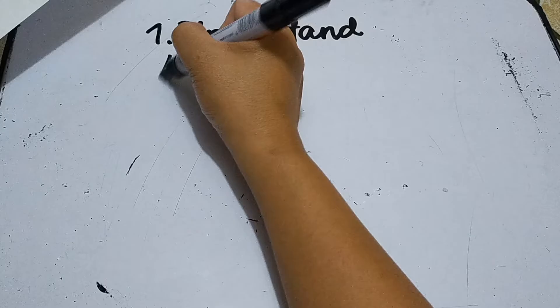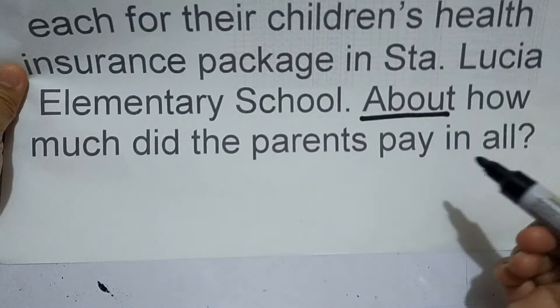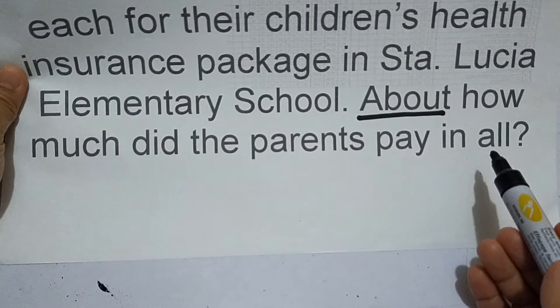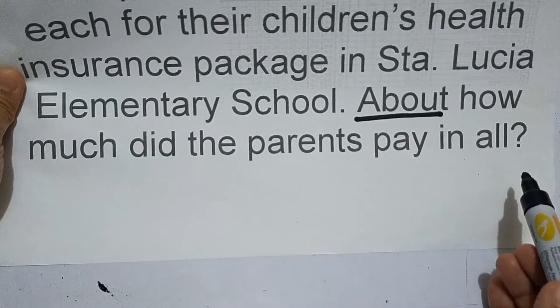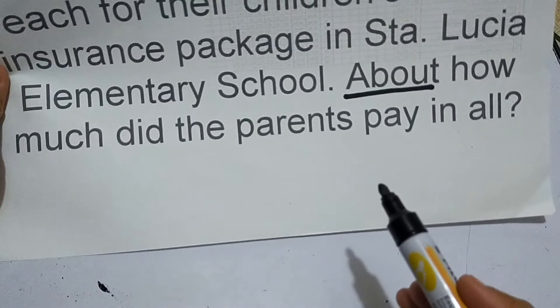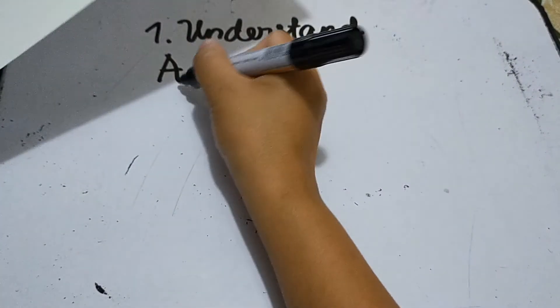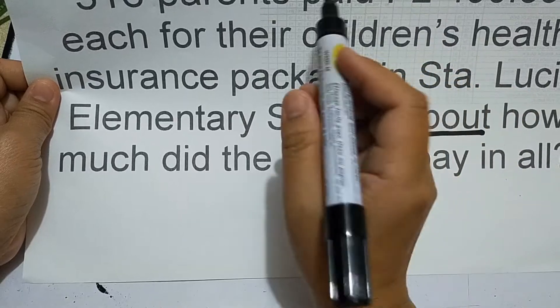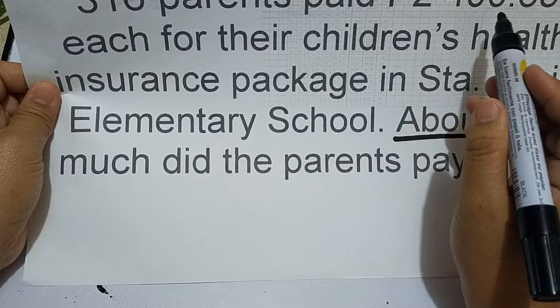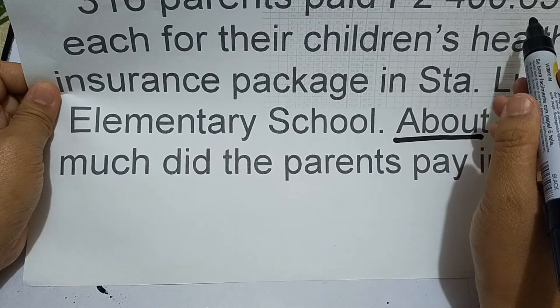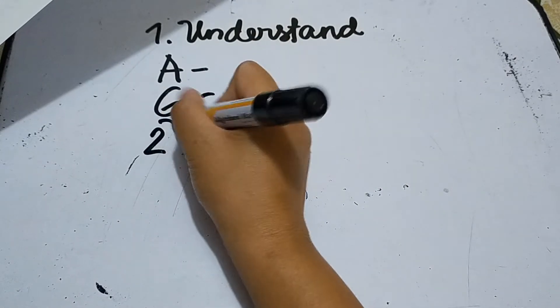Under understand, we have what is asked: the amount of money did the parents pay in all. That's what is asked. And then the given is 316 parents and 2,400 pesos and 65 centavos. After understand, the next step is plan.